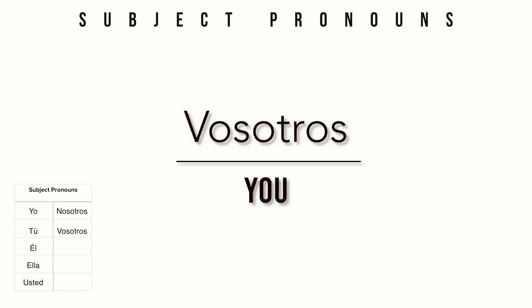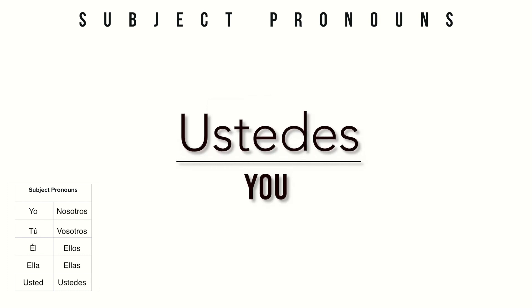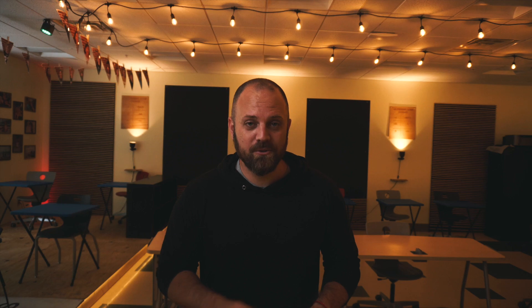Ellos means they, and ellas also means they — but ellas is used only when that group is all girls. Then we have ustedes, which is the pluralized version of usted. In Latin America they use ustedes all the time for addressing multiple people, like y'all, you guys, all of you. Some of the 'you' forms can be confusing, but just spend a little time studying them and as you listen to Spanish it'll get much easier.